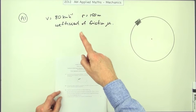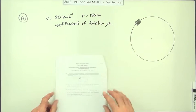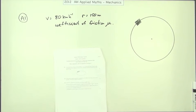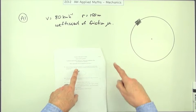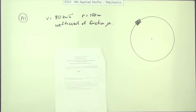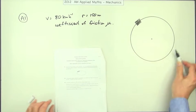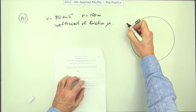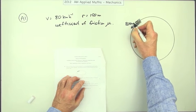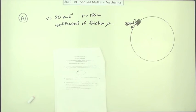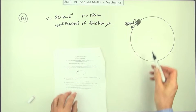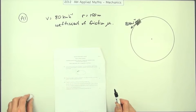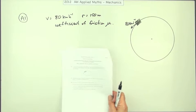The 2012 Advanced Higher Applied Maths, the Mechanics section first. Question 1, motion in a circle. A car travels at a uniform speed of 80 kilometers per hour on a horizontal track of radius 150 meters. So here's the speed of 80 kilometers per hour, a bit nasty with the units there. The radius is 150 without slipping. Calculate the coefficient of friction between the tires and the track.